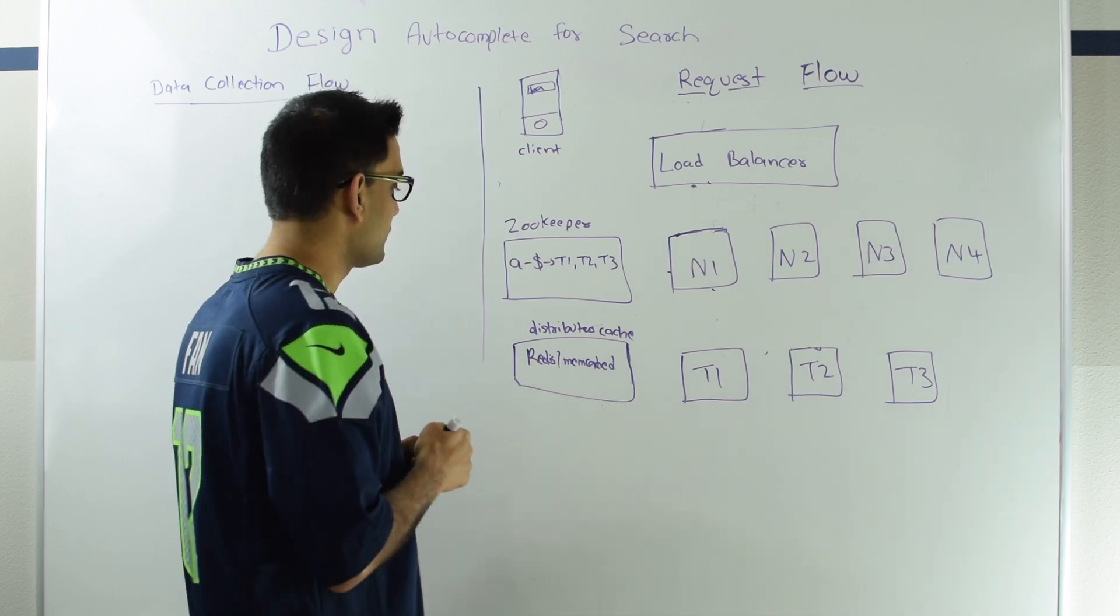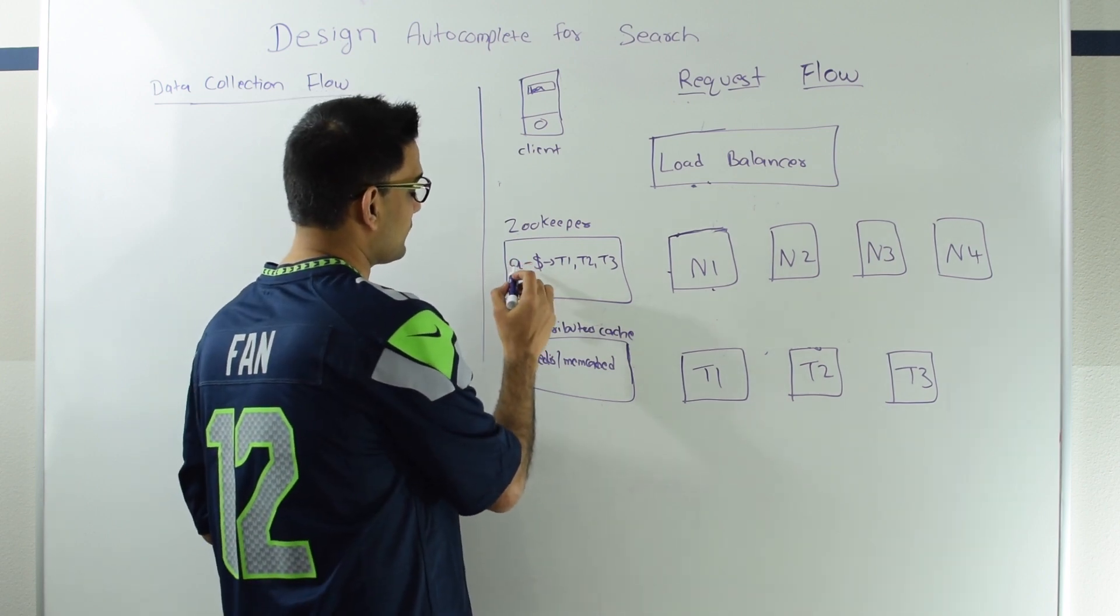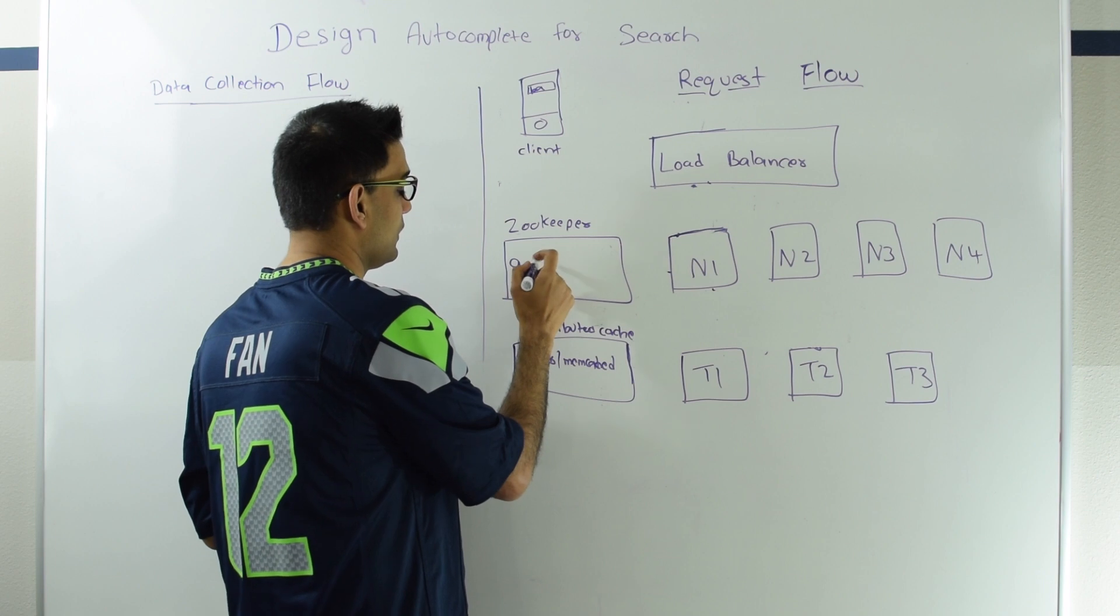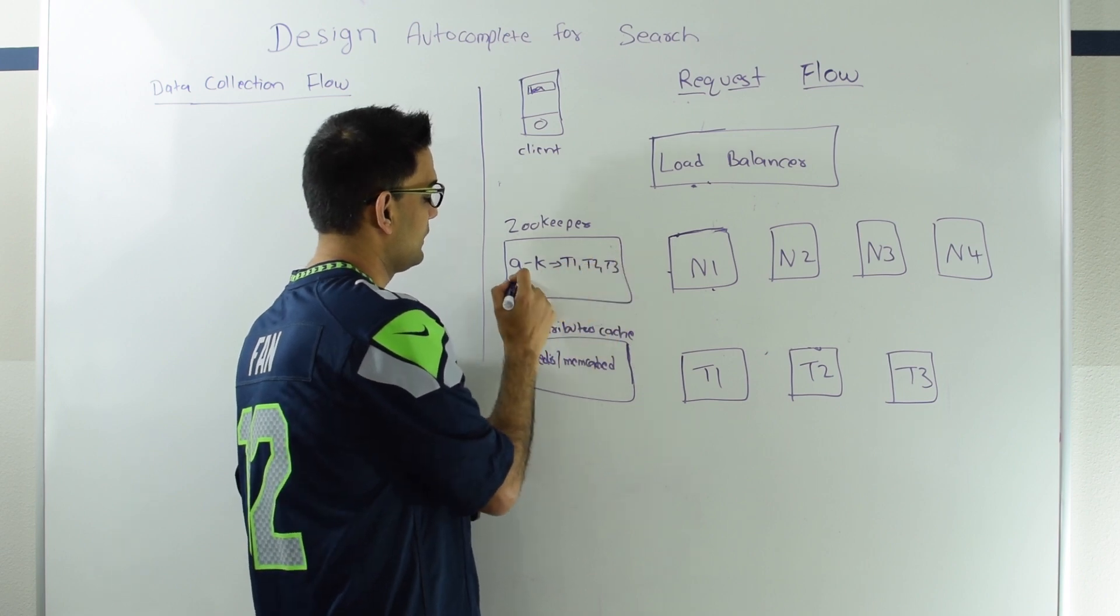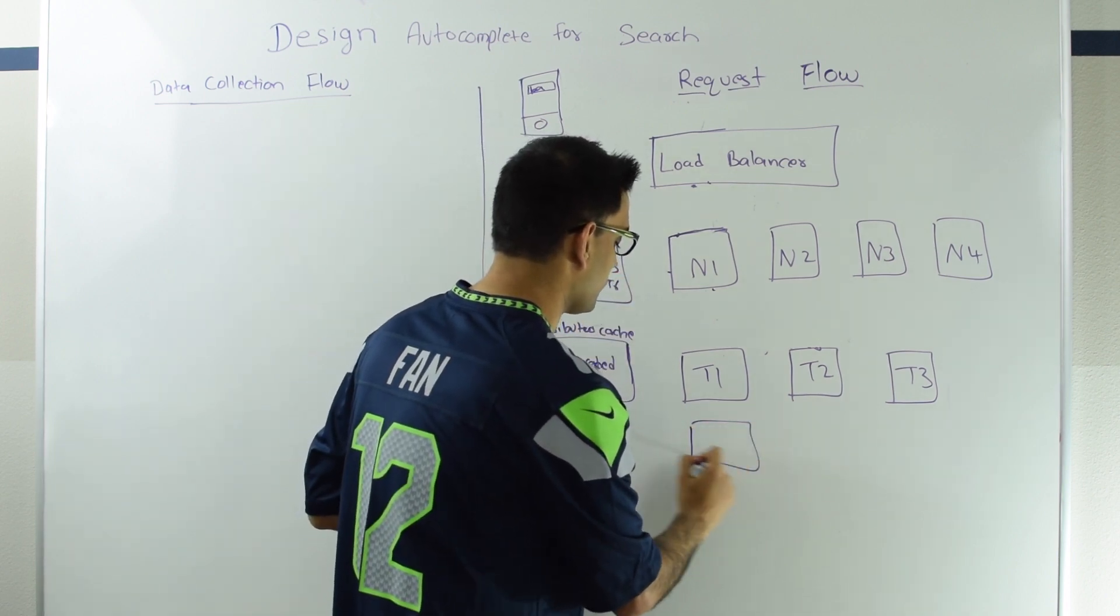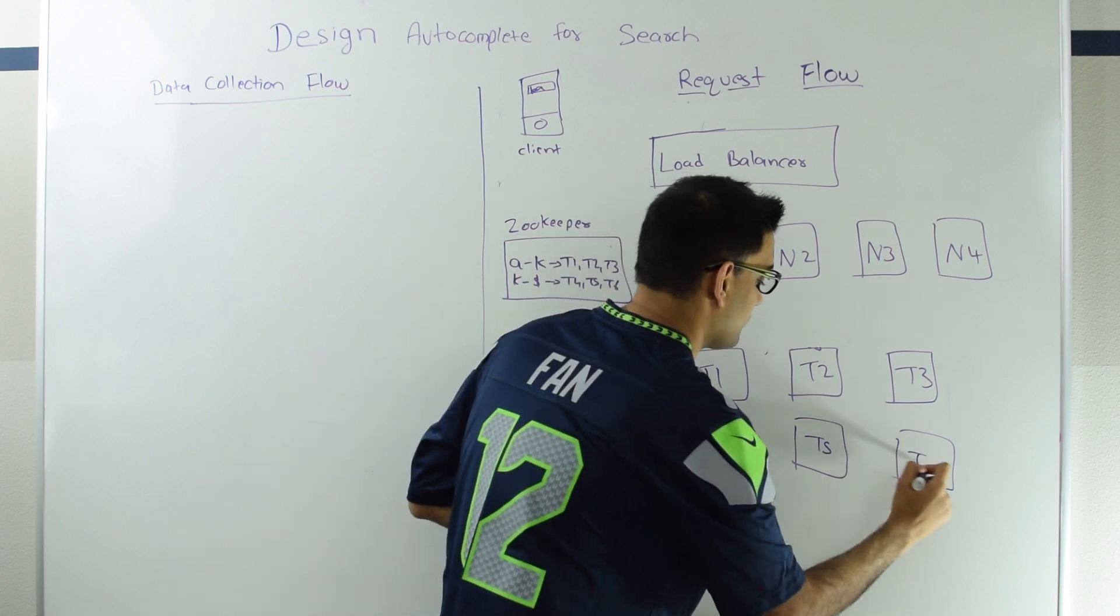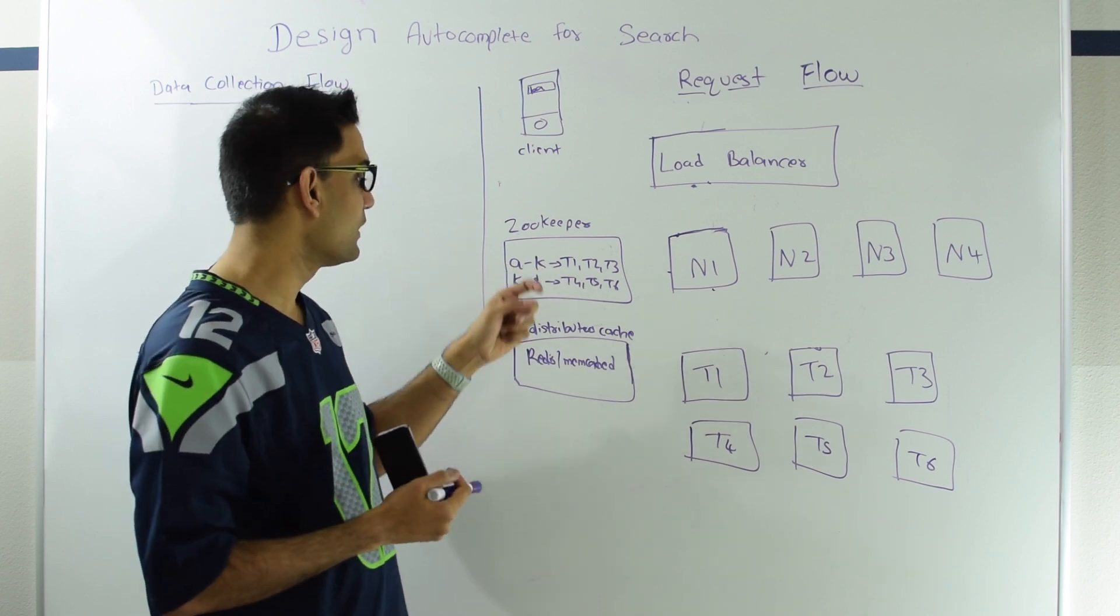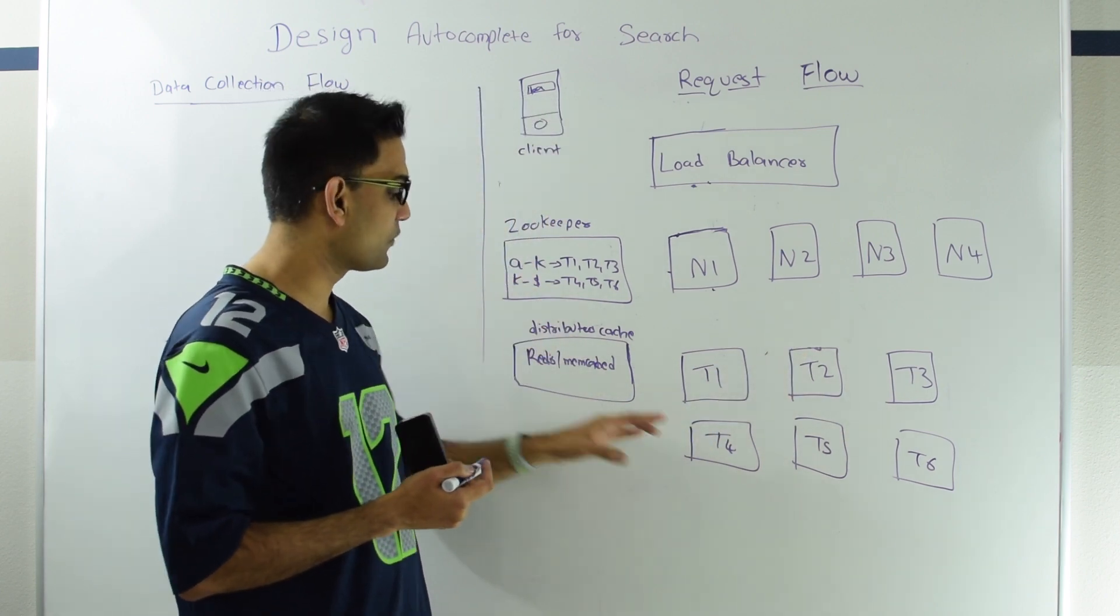This is one way in which this service could be designed. So instead of saying A to dollar everything is in T1, T2, T3, we say something like this: A to K (where K is exclusive and A is inclusive) goes to T1, T2, T3, and K to dollar goes to T4, T5, T6. They introduce three new nodes which will hold replicas of each other. Now we are saying that trie or all the prefixes starting from A up till K, not including K, will go to T1, T2, T3, and all the prefixes starting from K till the end of the terminal character will go to T4, T5, T6.